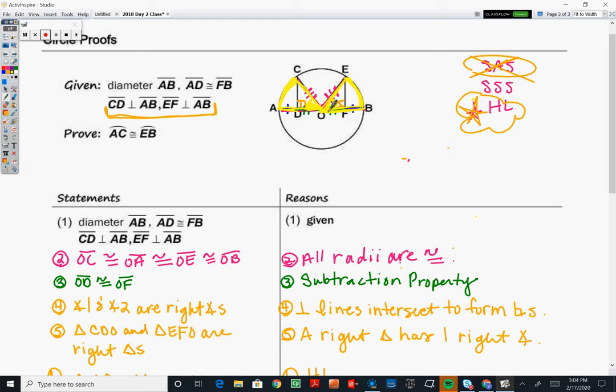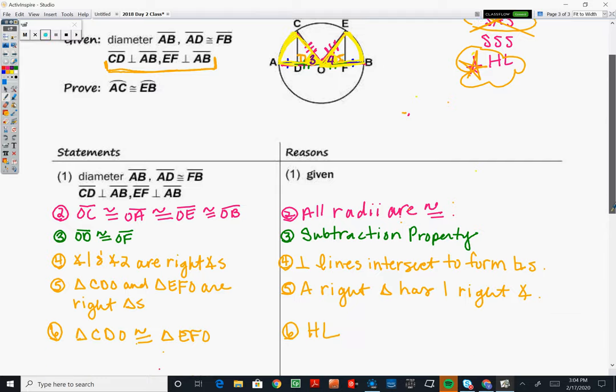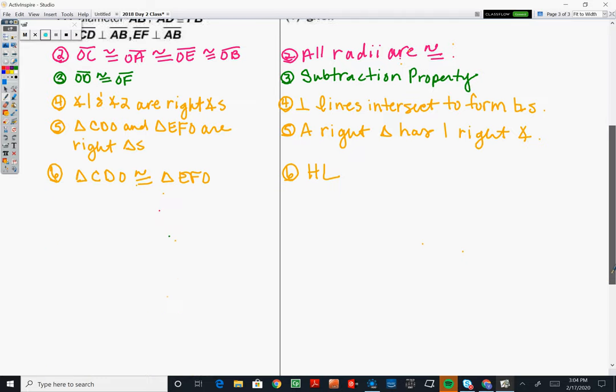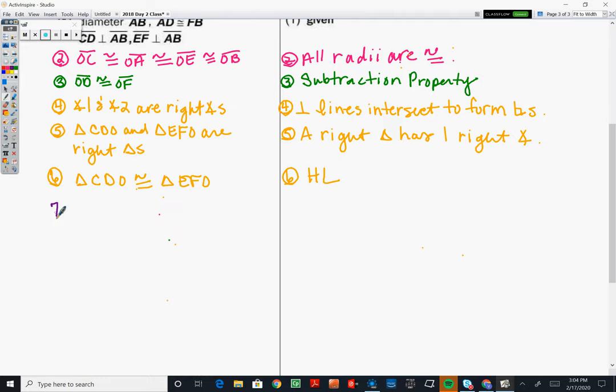And those two angles are congruent. So let's grab the purple. I'm going to put a three here, and put a three here and a four there. Those two angles are congruent by CPCTC. So number seven, angle three is congruent to angle four by CPCTC.